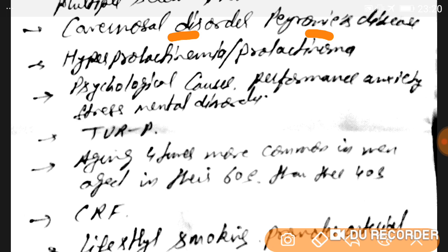There is also scar development in the penis — Peyronie's disease — which can cause ED, as well as hyperprolactinemia and prolactinoma. Watch the prolactin level. Physiological causes include performance anxiety, stress, mental disorders, and sometimes prostate surgery such as TURP — transurethral resection of the prostate — which also causes erectile dysfunction.